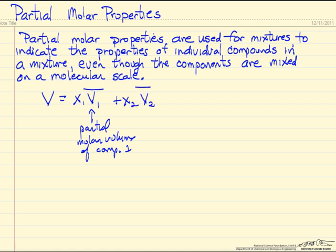So essentially, if we sum up the partial molar properties times the mole fractions, we get the molar properties. So this is the volume, and this is all molar quantities. So this is the volume of the mixture per mole of mixture, and this is the partial molar volume for component two.